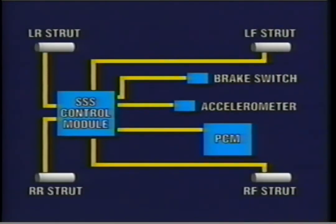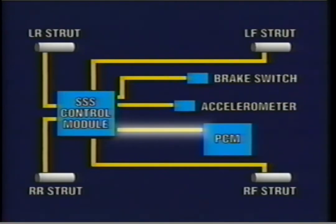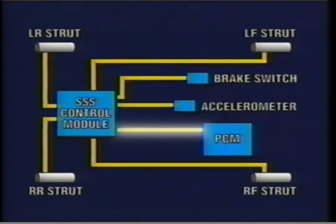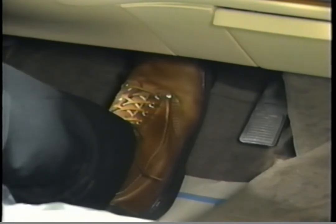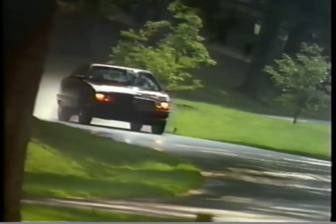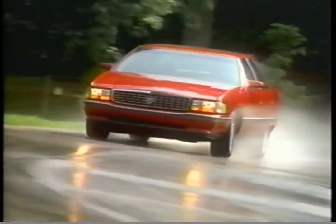Sensors inside each strut tell the control module what position the stepper motor valves are in: comfort, normal, or firm. Several inputs such as the brake pedal circuit, a lift-dive signal from the PCM, and a lateral accelerometer also figure into the ride firmness equation depending on model and year. At wide-open throttle, the damping system will go firm to keep the front end from lifting up. Hard braking maneuvers are likewise signaled, and the system will go firm to keep the car from nose-diving. Lateral accelerometer switches close in a hard curve, and the system responds by firming up the ride to prevent body roll.